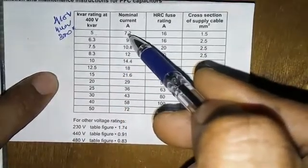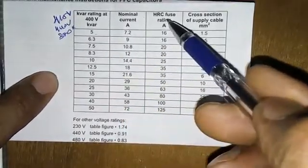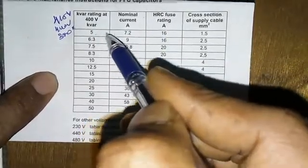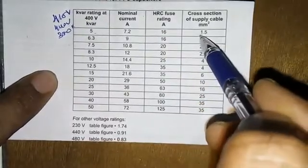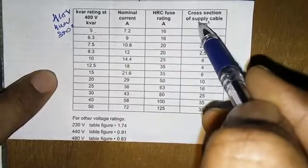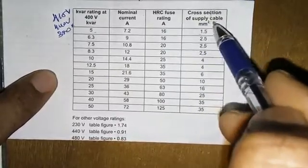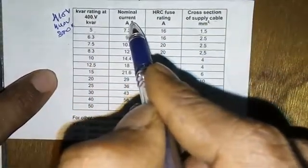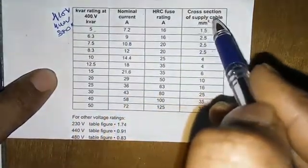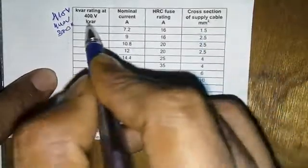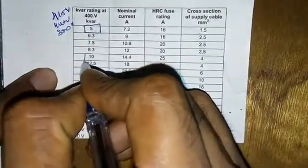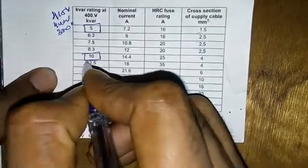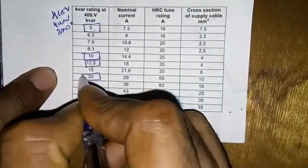The kVAR ratings are available here along with the nominal current rating. For 5 kVAR, 7.2 ampere current should be consumed, so you can choose a 16 ampere HRC fuse and 1.5 square mm cable for connecting the capacitor to the load. This is the way we choose the capacitor for capacitor bank assembling.